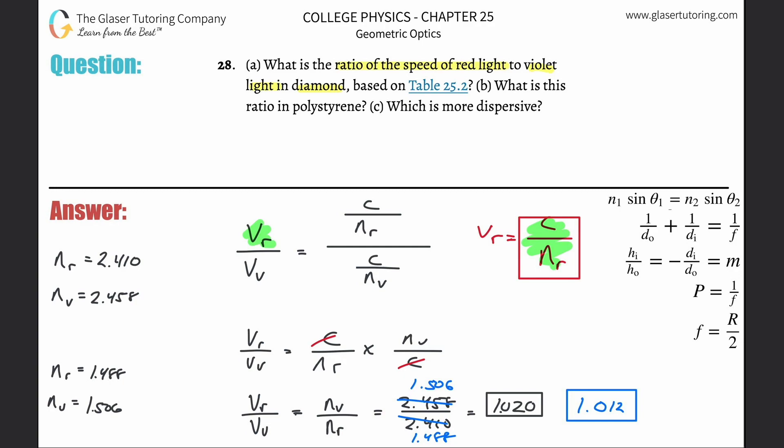So larger difference in velocities of the different wavelengths of light or frequencies of light, the larger the dispersion. This ratio here tells us that we have basically roughly a 2% difference between these two. And then the second one tells us that we get about a 1.2% difference between these two. So which one is larger?